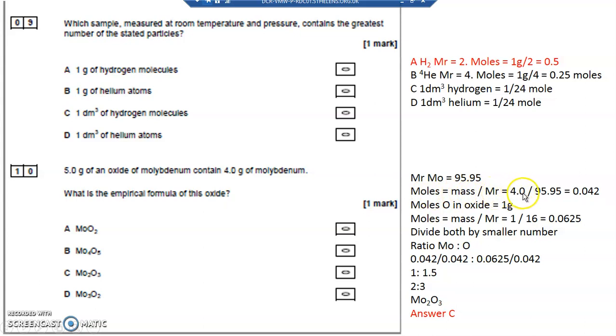Mass divided by MR is 4 divided by 95.95 equals 0.042. I know that there's 1 gram of oxygen in this oxide because there's 5 grams of the oxide and 4 grams of molybdenum.